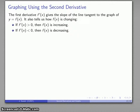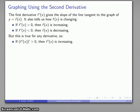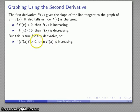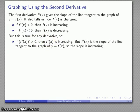This is going to be true for any derivative. So if I consider the derivative of the derivative — that second derivative — if the derivative of the derivative is positive, then the derivative itself is increasing. Since the derivative is the slope of the line tangent to the graph of y equals f, this means that the slope of the tangent lines are increasing.